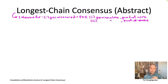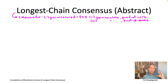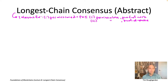Understanding proof of work or proof of stake is not a prerequisite for the main points of this lecture. But I want to make comments for viewers familiar with those concepts — for example, those who have studied proof of work blockchains using longest chain consensus like Bitcoin or the original Ethereum, or proof of stake protocols like Cardano and Tezos.